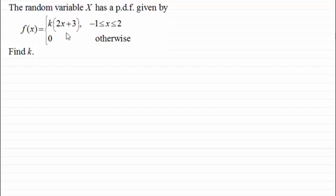So with this example, we've got f of x equals k times all of 2x plus 3, where x is valued between minus 1 and 2 inclusive, and then it's 0 otherwise. And we've got to find the value of this constant k.